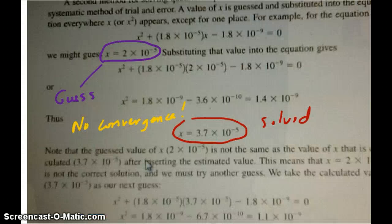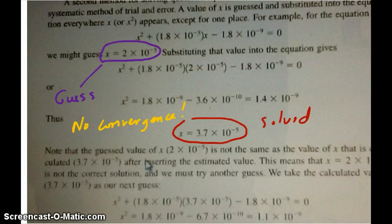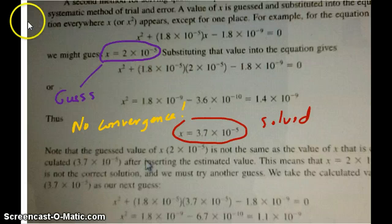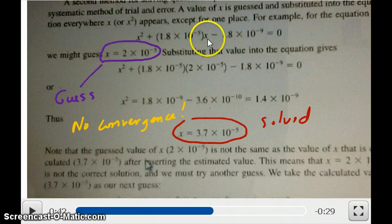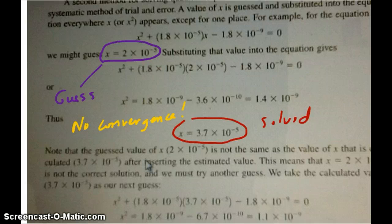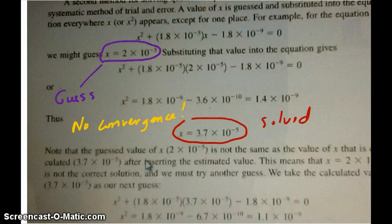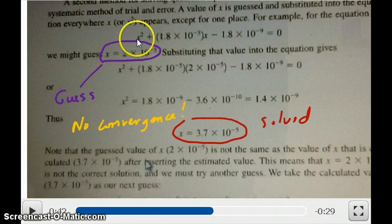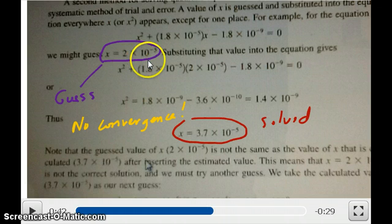So here's the example from the Zumdal textbook. Let's say you set up an equation again from an equilibrium type of problem and this is your equation here at the top. x squared plus 1.8 times 10 to the minus 5x minus 1.8 times 10 to the minus 9 is equal to zero. This, by the way, is a very common type of equation in equilibrium problems. Now if you don't want to use the quadratic formula in this case, you can go ahead and try to do your successive approximation. In this case, your first guess is circled by this purple color and it's 2 times 10 to the minus 5.